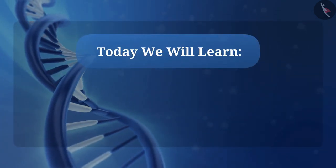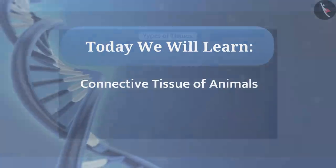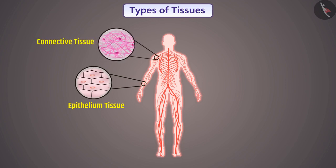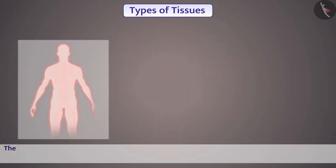Today we will learn about the connective tissue of animals. In the body of animals, various tissues together perform different functions. On the basis of functions performed by tissues, animal tissue is classified into epithelium tissue, connective tissue, muscular tissue, and nervous tissue. Now let's understand the connective tissue of animals.